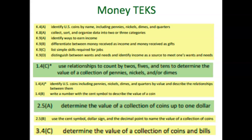Our focus here is on teaching the concept of money. Looking at kinder through third grade: in kindergarten, students identify coins by name, sort and organize them, count by twos, fives, and tens to determine the value of a collection, identify coins by value and their relationships — five pennies equal a nickel, two nickels equal a dime — and write a number with the cent symbol. In second grade they move to collections of coins up to a dollar and add the dollar sign and decimal point. In third grade they determine the value of a collection of coins and bills.